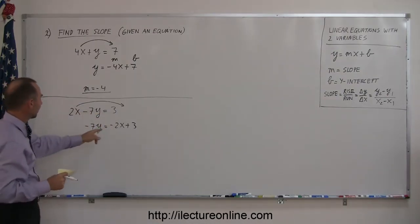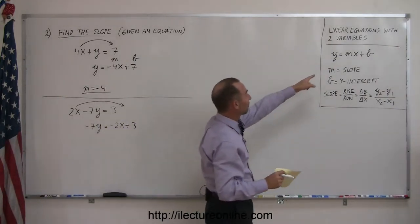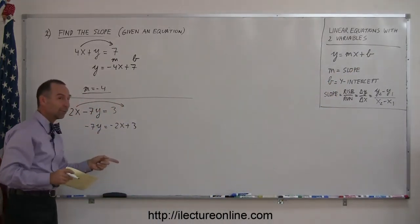Now, you say, okay, I'm done. There's my slope. Oh, not so fast, because it doesn't exactly look like what you have over here. It has to be y equals mx plus b, not negative 7y. Ha!